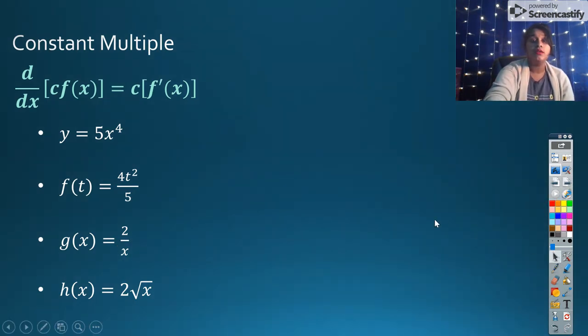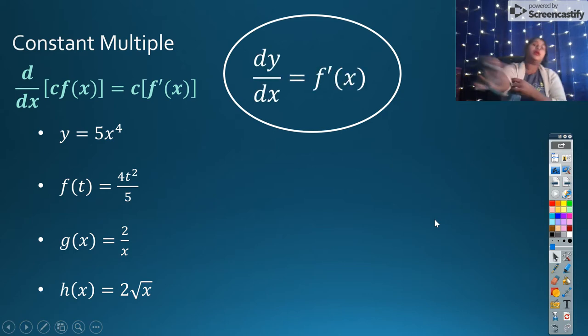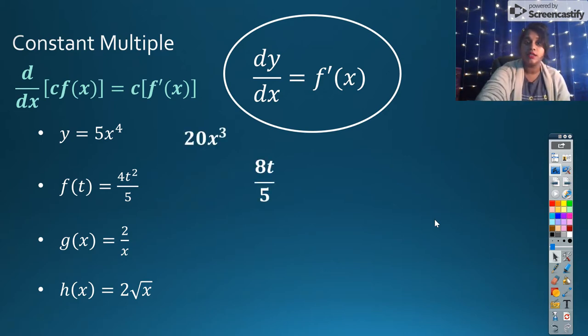And our final rule will be the sum and difference rule. But before we talk about that, here's that other notation I was telling you about. We saw dy dx was equal to y prime. And if y prime is equal to f prime, then dy dx has to also be equal to f prime. Here's proof of our answers.